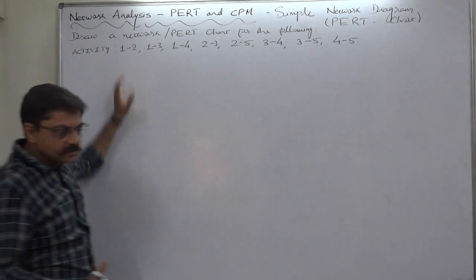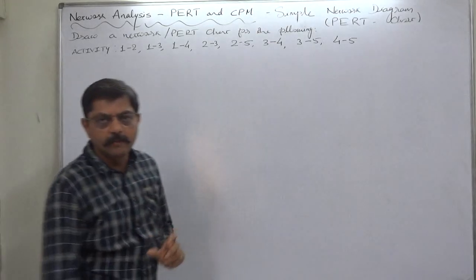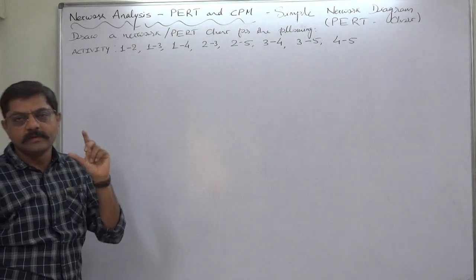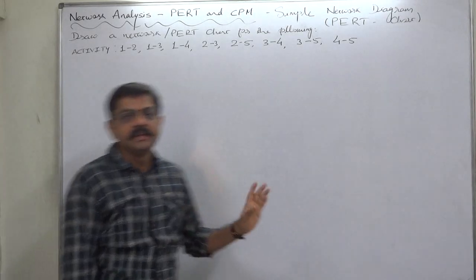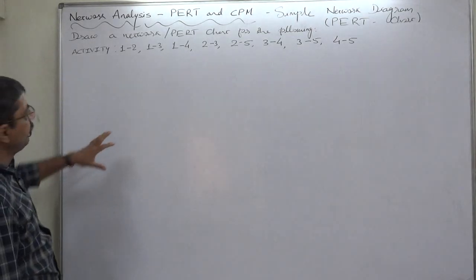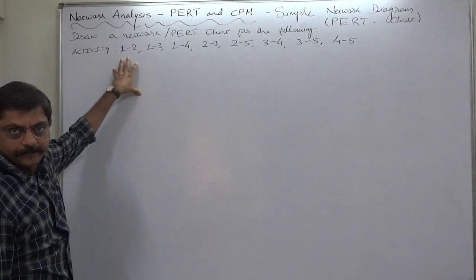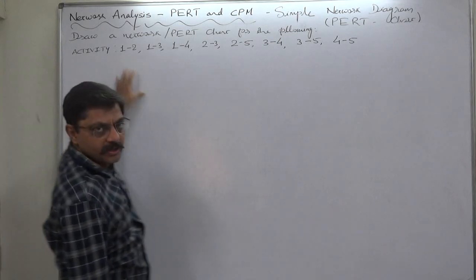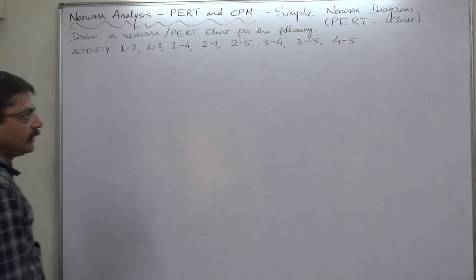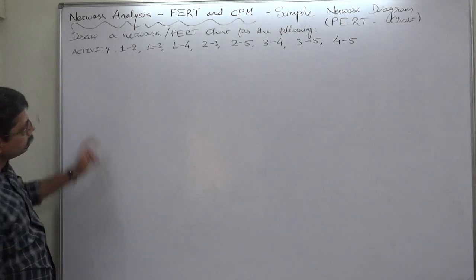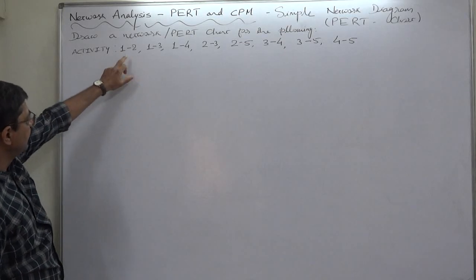Up to the last problem, the information was very clear about various activities together with their predecessors and successors. But this time we have very limited information that shows only event numbers. How to draw a network chart?